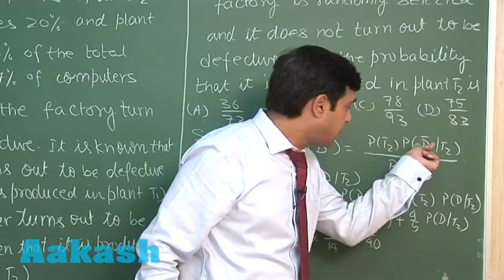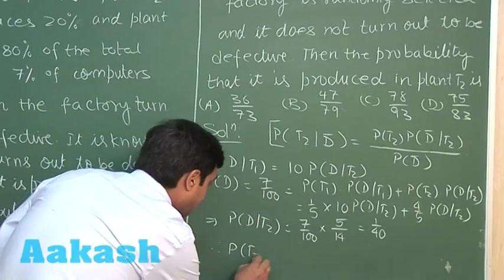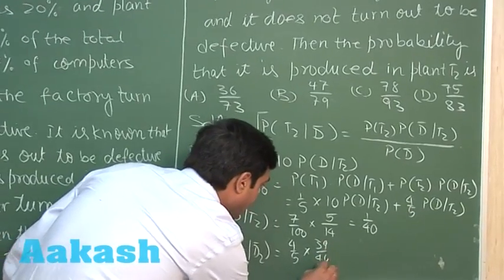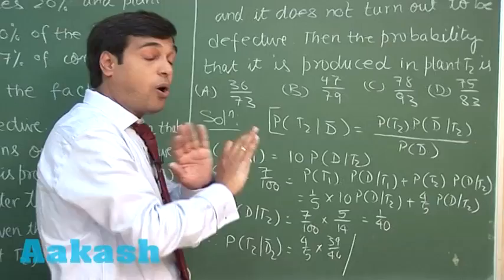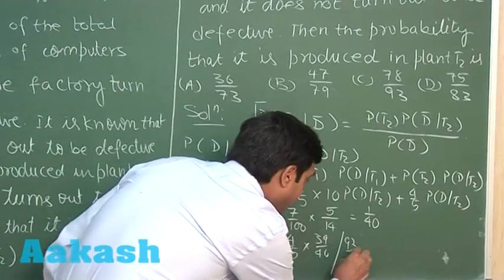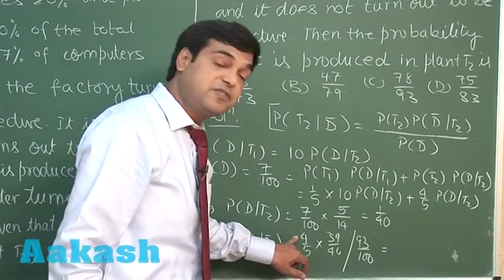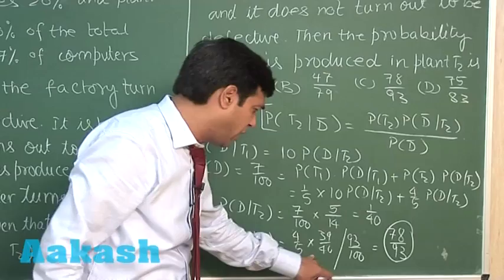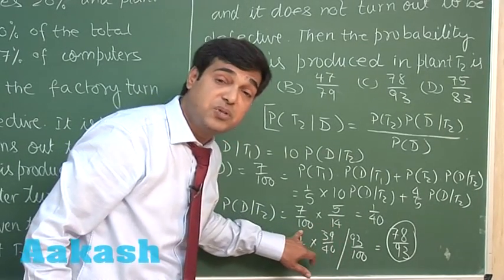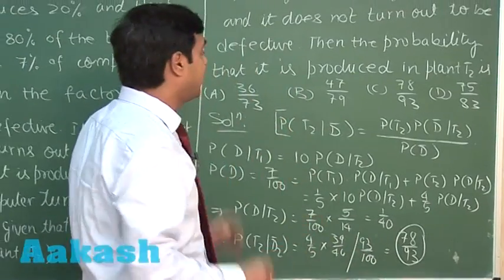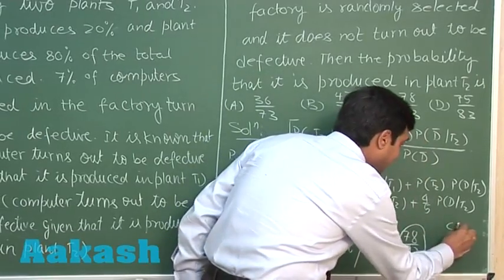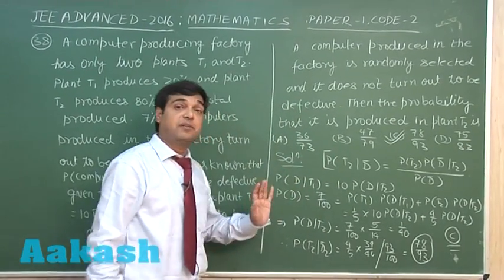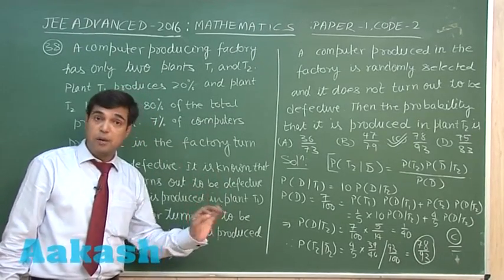So P(not defective | T2) equals 39 by 40. Substituting back: P(T2 | not defective) equals (4/5) × (39/40) divided by (93/100). Simplifying, the numerator gives 39/50, and dividing by 93/100 gives 78 by 93. From the given options, option C is the correct answer. The question was lengthy but the solution is straightforward using Bayes' theorem.